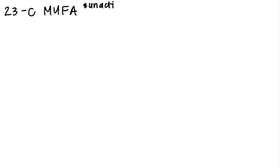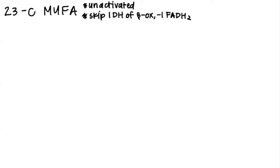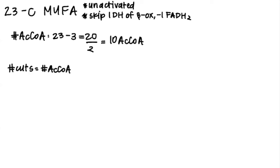Our final example is a 23-carbon monounsaturated fatty acid. Because it's a fatty acid, we know it's unactivated. Because it's a MUFA, the first dehydrogenase step of the very first round of beta oxidation is skipped, so we have one less FADH2 so that an isomerase can change the cis MUFA to a trans MUFA. At the very end, we will subtract 1 FADH2. To calculate acetyl-CoA, we subtract 3 from the carbons to account for propionyl-CoA and divide by 2, giving 10 acetyl-CoA. The number of cuts equals the number of acetyl-CoA, so we have 10 rounds of beta oxidation.